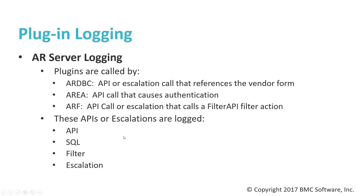Now let's look at plugin logging. Let's start by looking at what plugin information you can get from the AR server logs. Plugins are called by different activities on AR server — for example, ARDBC plugins are vendor forms accessed via API call or escalation. Area plugins are called through authentication, which will have some evidence in the API and sometimes SQL log. AR filter plugins are always called by a filter. In general, the types of logs from the server will be API, SQL, filter, and escalation.